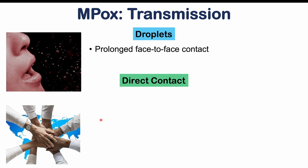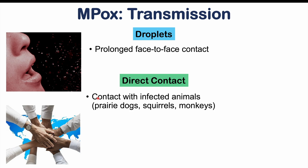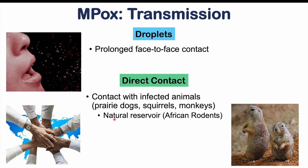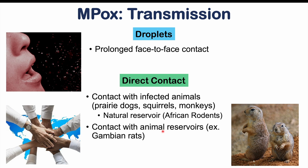Direct contact includes contact with infected animals such as prairie dogs, squirrels, monkeys, pigs, hedgehogs, and others. The natural reservoir for this virus appears to be African rodents — monkeys and humans are incidental hosts, meaning the virus can cross a species barrier and infect them, but African rodents like Gambian rats are the main reservoir hosts the virus relies on.